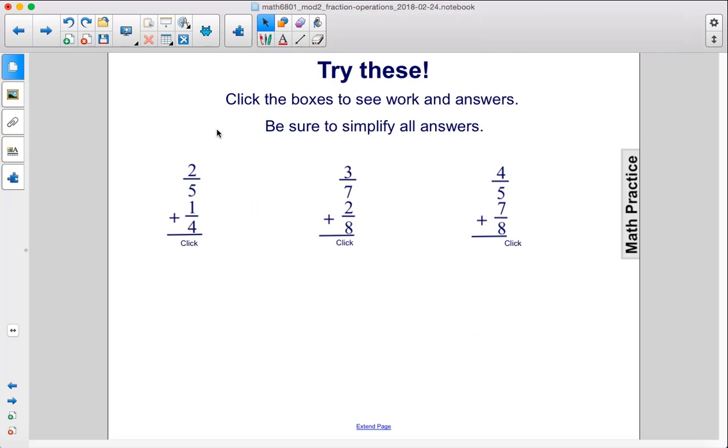Try these. Click the boxes to see the work and the answers. All right, so we have 2/5 + 1/4. What is our common denominator here? Well, an easy way to find a common denominator is just to multiply the denominators together. So 20. 20 is a common denominator for 4 and 5. You have to multiply 5 by 4 to get 20. So in this case, we multiply the numerator by 4 to get 8.